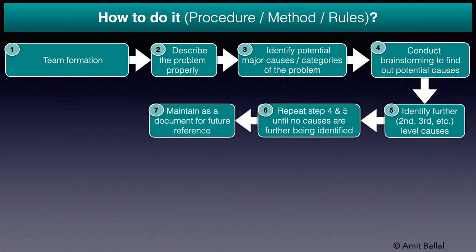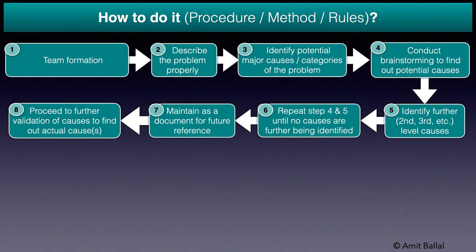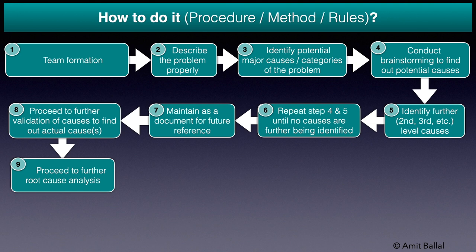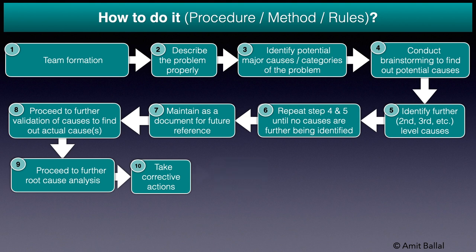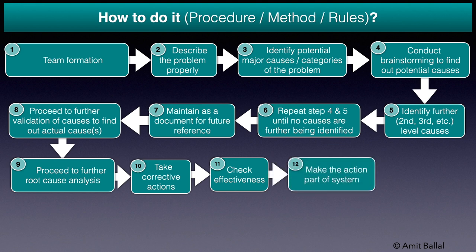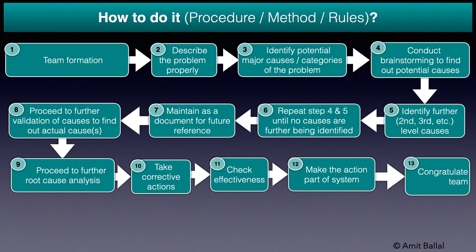Step 7: Maintain this Ishikawa diagram as a document, also called the Master Ishikawa, so that it can be used in future problem solving since it is not needed nor economical to redo brainstorming on the same topic every time. Step 8: Proceed to further validation of causes to find out whether they are actual causes. Step 9: Identify root causes through tools such as YY analysis, hypothesis testing, etc. Step 10: Identify and implement corrective action to eliminate the root causes. Step 11: Check the effectiveness of the corrective action by checking whether the problem is recurring. Step 12: Make the corrective actions part of the system and/or regular routine. Step 13: Congratulate the team to motivate them.